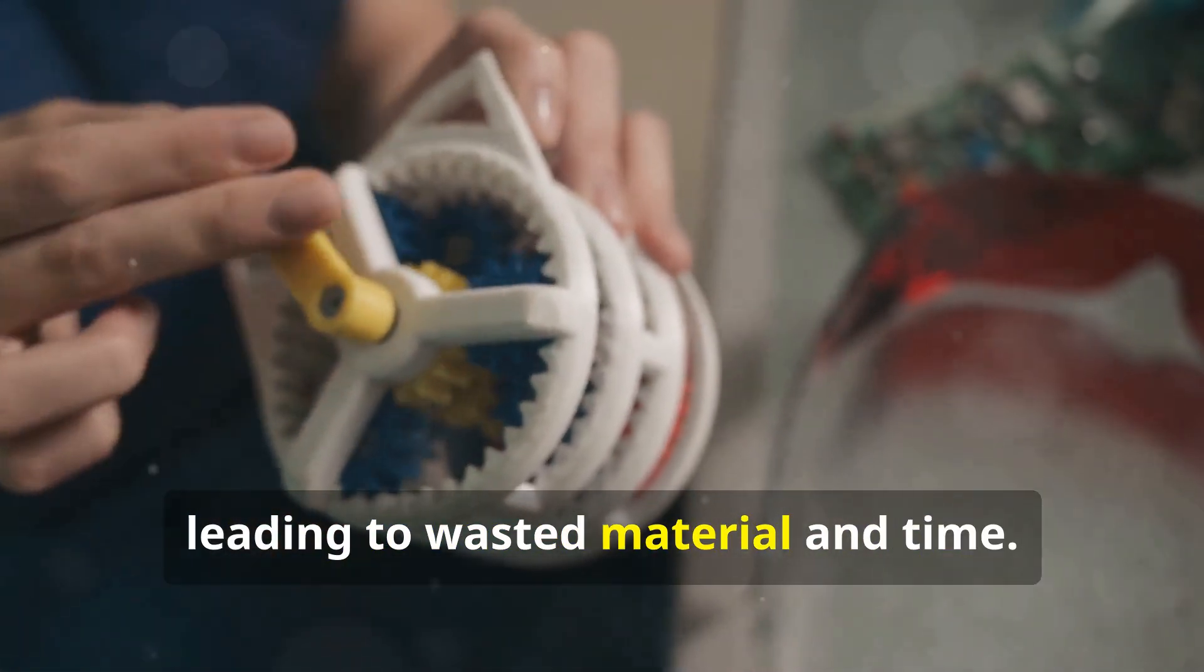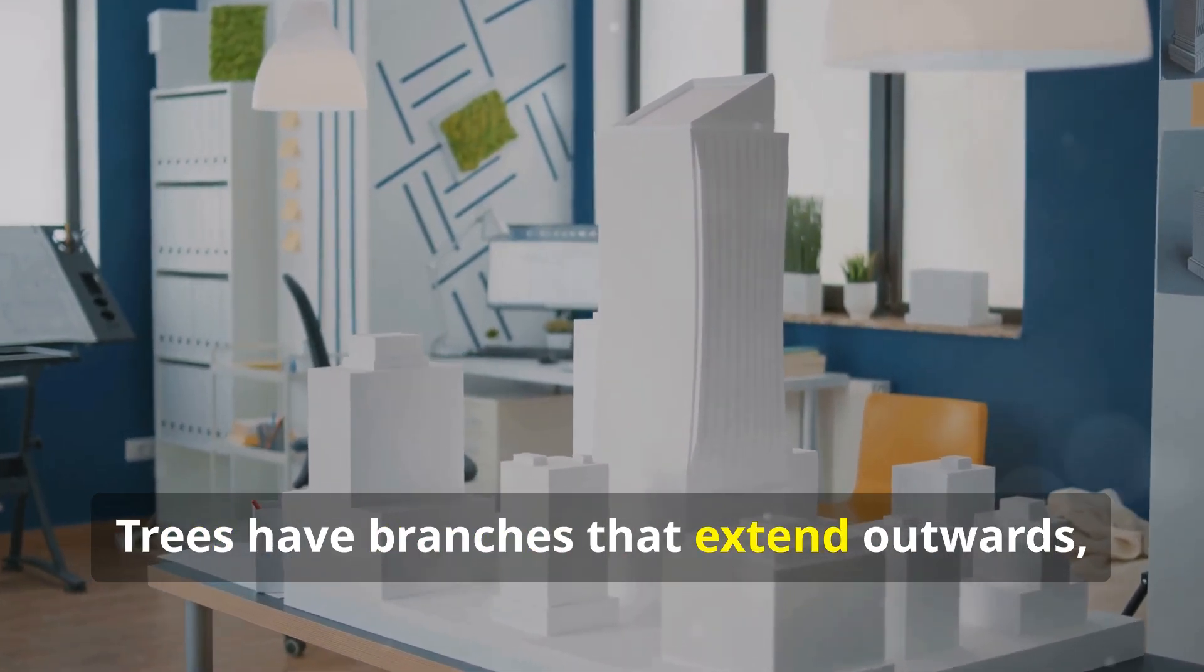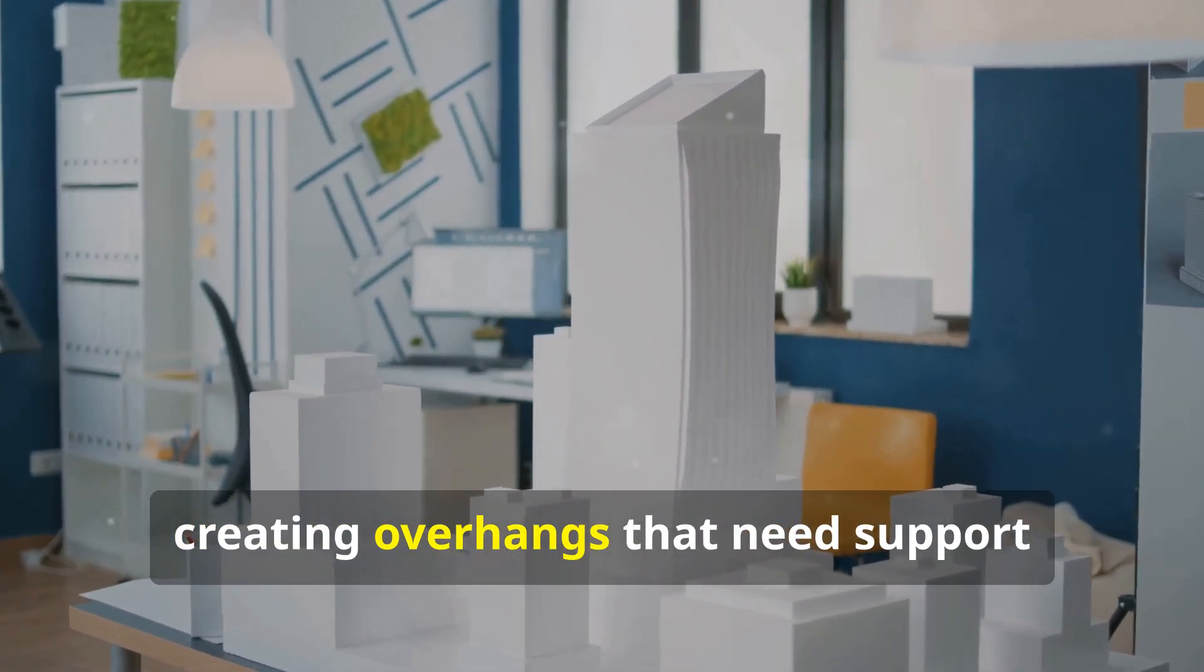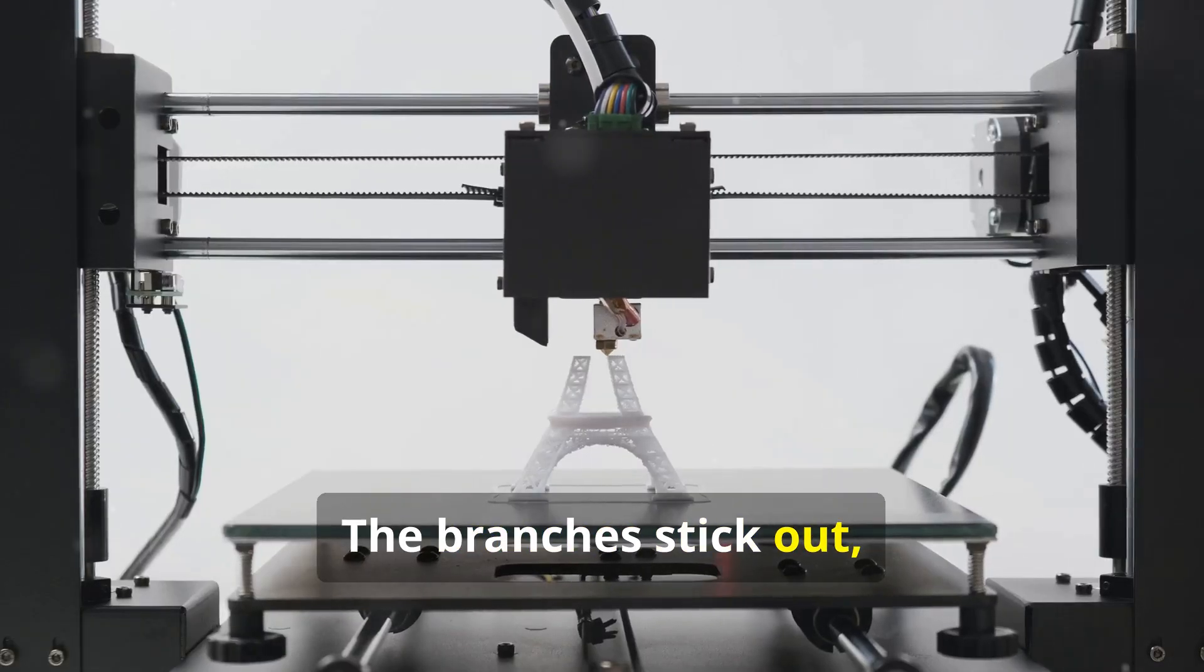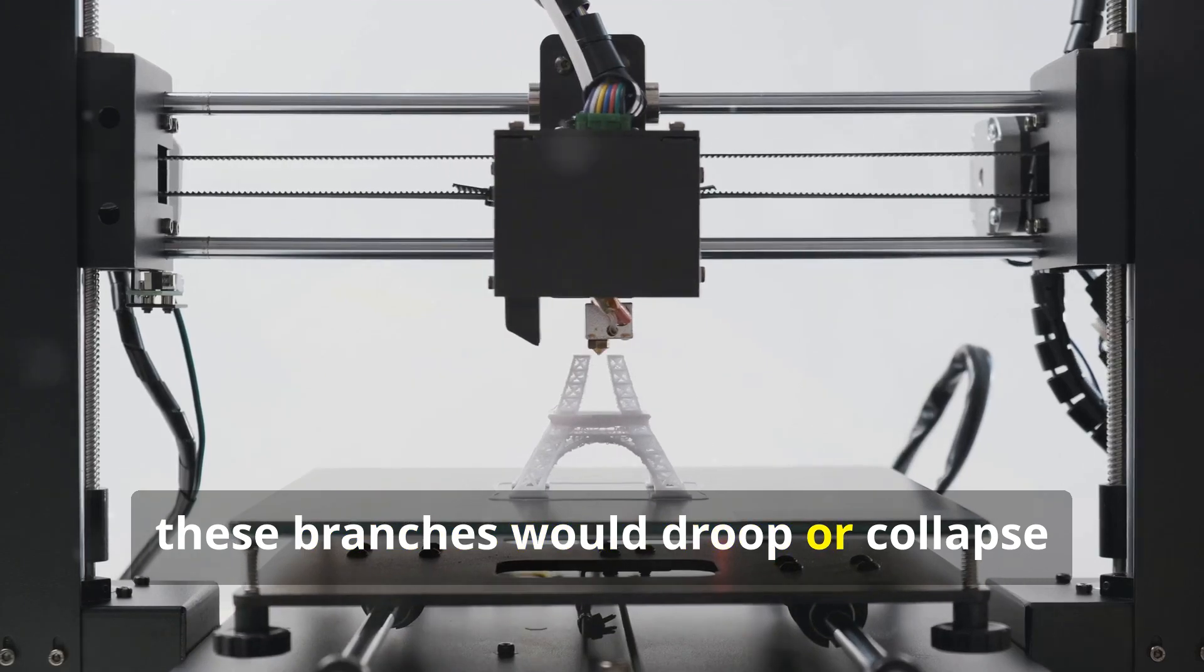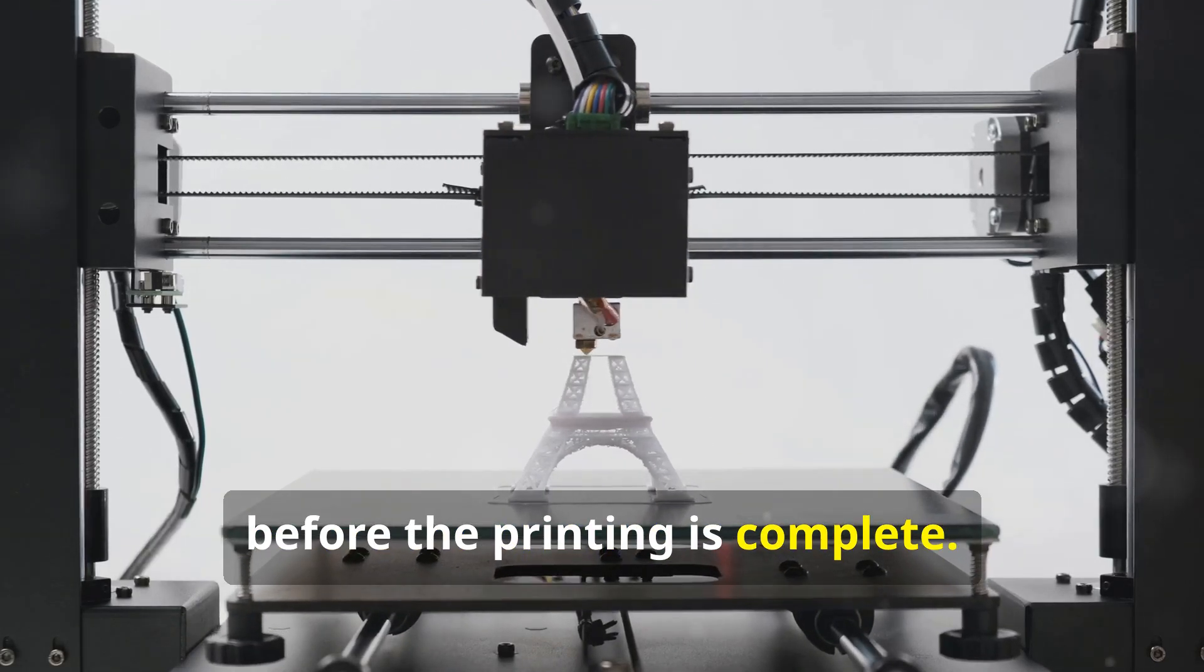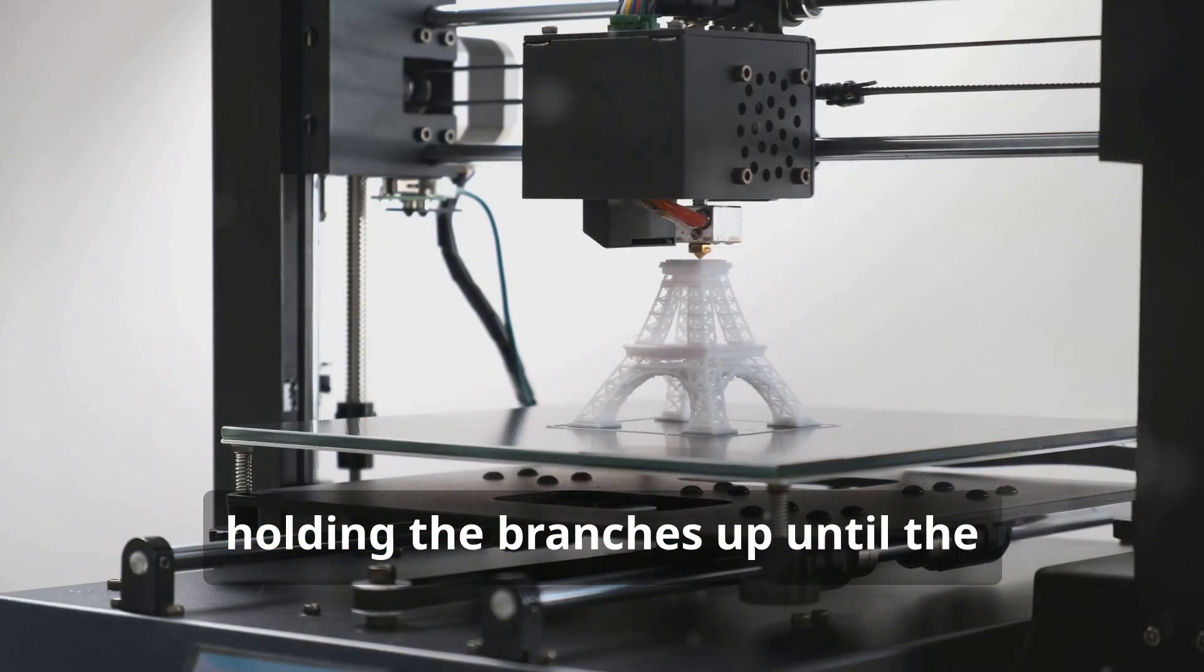Let's say you're printing a model of a tree. Trees have branches that extend outwards, creating overhangs that need support during the printing process. The branches stick out, defying gravity. Without support material, these branches would droop or collapse before the printing is complete. Support material acts as temporary pillars, holding the branches up until the printing is finished and the plastic has solidified.